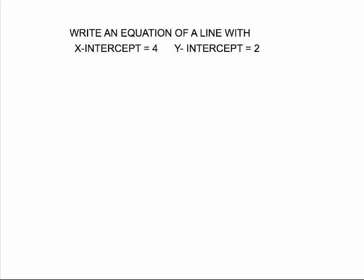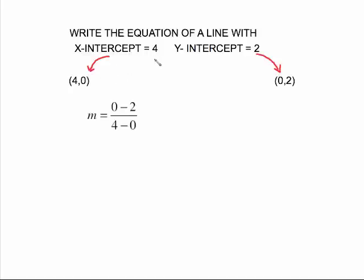New type of problem, but you'll see that it is very similar to ones that we have done once you get it started. It says, write an equation of a line with x-intercept equal to 4 and y-intercept equal to 2. To do this, you have to think about what the intercepts mean. An x-intercept is going to be of the form 4, 0. A y-intercept equal to 2 is 0, 2.